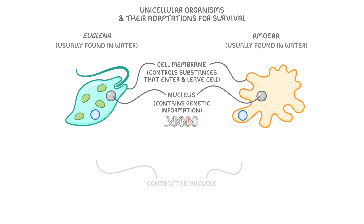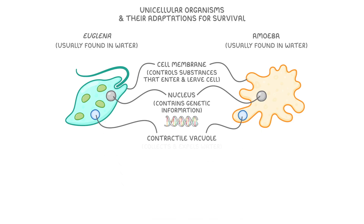Another organelle these cells share is a contractile vacuole, which collects and expels water, and in doing so controls the volume of water in the cell, which in turn controls its shape. All of these subcellular structures are common to both cells, but each organism also has some unique structures that make them really specialized.